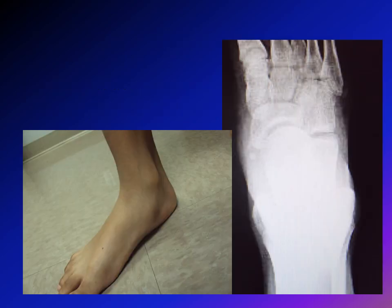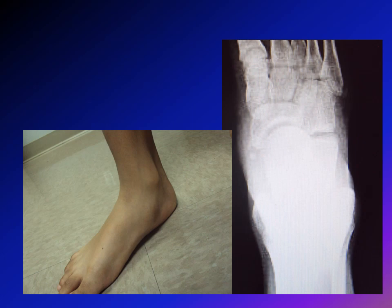Here is one of my patients — there is a prominence at the medial plantar aspect of the foot. On the x-ray you can see a small ossicle next to the navicular bone. This small ossicle is Type 1 of accessory navicular. Type 1 is usually not symptomatic. The posterior tibial muscle inserts into this part, so the ossicle is essentially within the posterior tibial muscle.